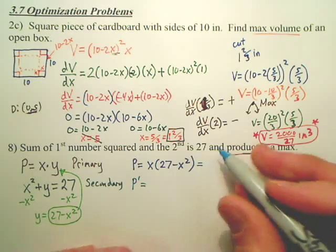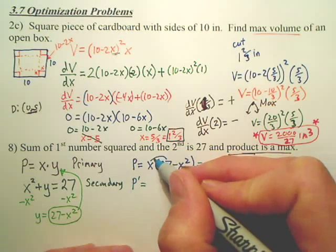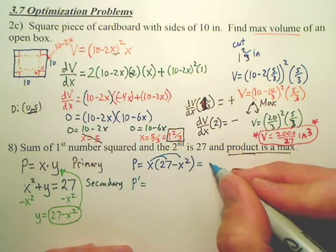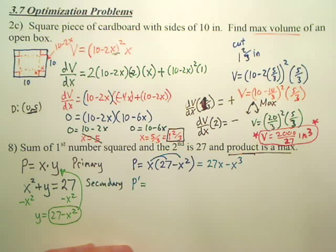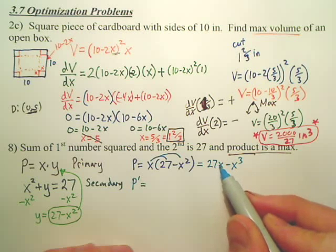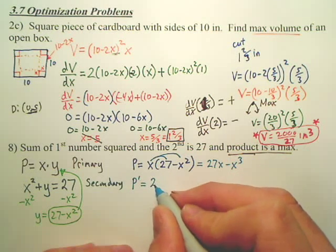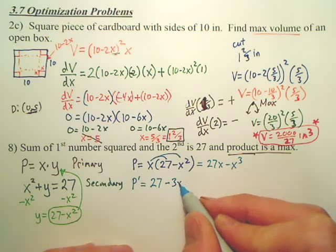Would it have been easier maybe to distribute the x real quick? Would that be easier than doing product rule? I think so. So it would be 27x minus x cubed. Is that okay? So the derivative of this would be, what's the first part? 27. And the derivative of this would be? Minus 3x squared.